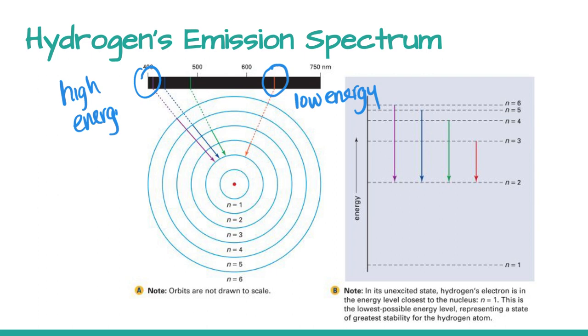In terms of where these are going from energy levels, anything that we can see with line spectra are transitions happening back down to the n equals two level. For the red line, that's a transition from n equals three back down to n equals two. For the green one, it's a bigger jump from n equals four to n equals two. You can see it going from four to two on this diagram.